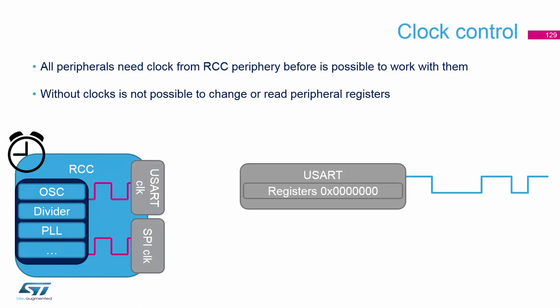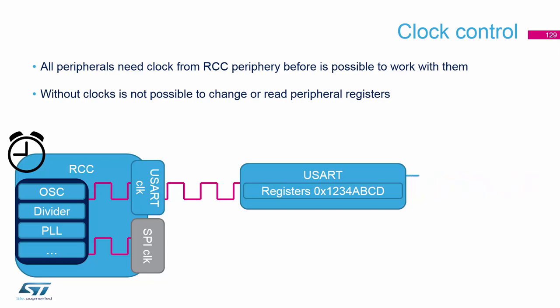What is our interest now with the RCC? All peripherals that we want to use require clocks. You can select the clock source, dividers, multipliers, and the PLL circuit in the graphical tool — this is very important. But also, all peripherals need their clock enabled, and you must do this manually. If a peripheral does not have its clock enabled, we cannot change its registers and therefore cannot configure it. So we must first enable the clock to each peripheral before we can configure it.